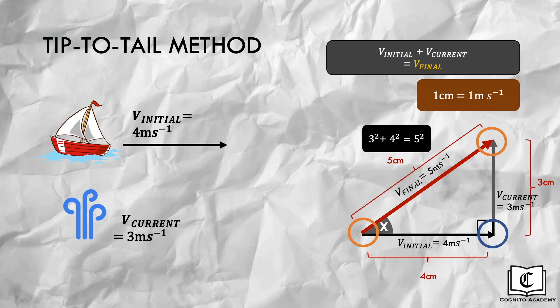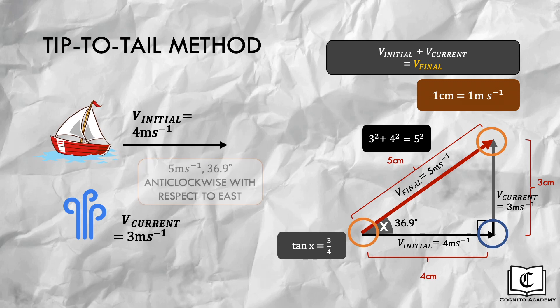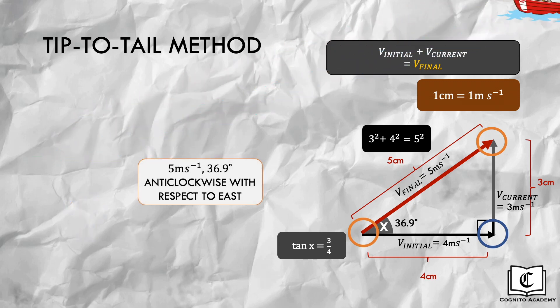For direction, we use trigonometry to find angle x, giving us 36.9 degrees. The final velocity of this boat is therefore 5 meters per second, 36.9 degrees anticlockwise with respect to east.